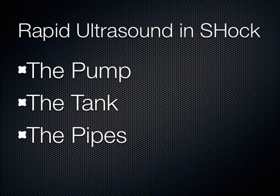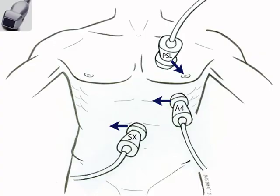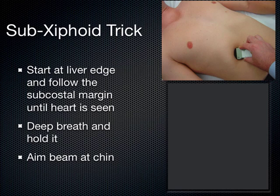We'll start with the pump — and you'll always remember Austin Powers when evaluating somebody in shock from now on. It's an evaluation of global LV function and any obstructive processes, specifically pericardial effusion or tamponade and RV strain in the setting of pulmonary embolism. The three probe positions to evaluate the pump are the parasternal long, the apical four-chamber, and the subxiphoid. We'll start with the subxiphoid view, which is probably the one I reach for first when a patient is in shock, just to see if the heart is moving.